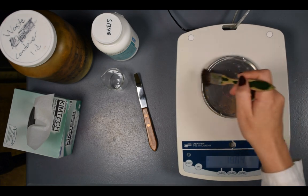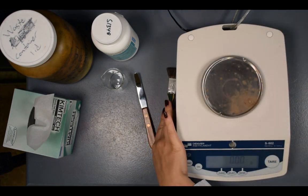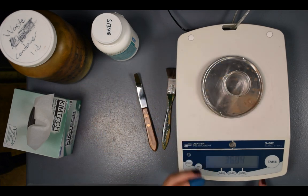Use a brush to clean the top loading balance of any dust or solids. Place the beaker on the top loading balance. Tare the top loading balance with the beaker on it.